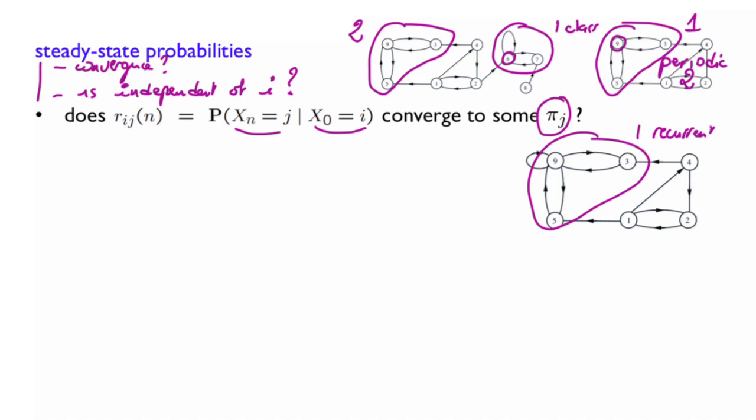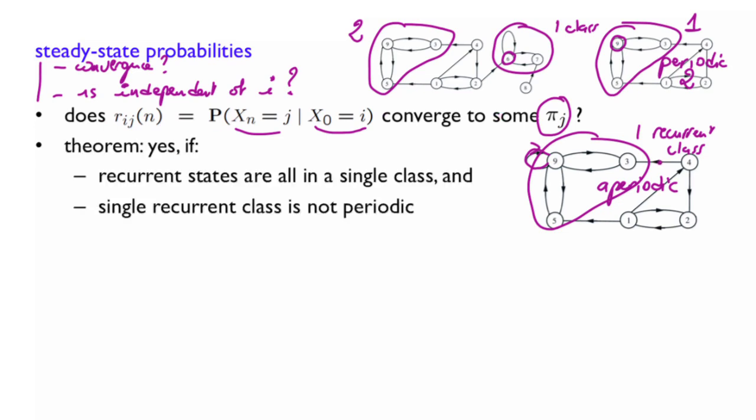So let us consider now the final case where you have only one recurrent class, and that recurrent class is not periodic. And how do we realize that this is not periodic here? Well, we have a self-transition here. So now that we have one recurrent class, and this recurrent class is aperiodic, the question is, do you have this kind of convergence here? And it turns out, and this is the big theory of Markov chains under the name of steady state convergence theorem, that indeed, yes, the r_ij's do converge to a steady state limit, which we call a steady state probability, as long as these two conditions are satisfied.